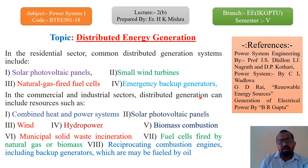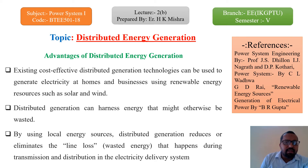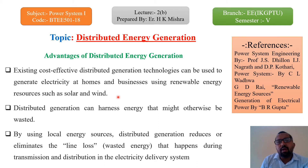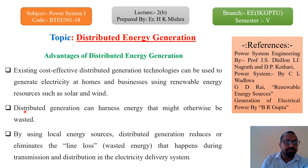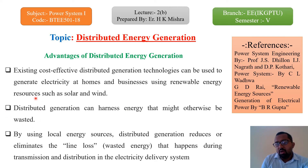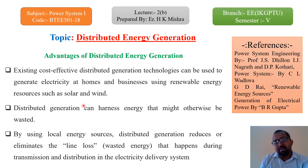In university examinations, they may ask about the advantages and disadvantages of distributed energy generation systems. The first advantage is that existing cost-effective distributed generation technologies can generate electricity at homes and businesses using renewable energy resources such as solar and wind, improving the overall quality and demand of power supply in particular areas. Distributed generation can also harness energy that might otherwise be wasted, as discussed with the economizer and superheaters in thermal power plants where waste heat gases are recovered.